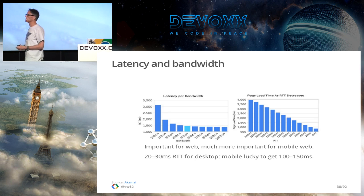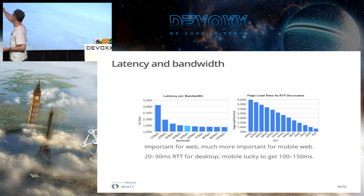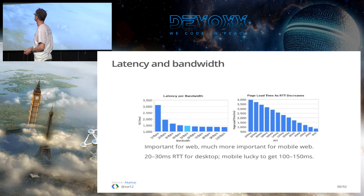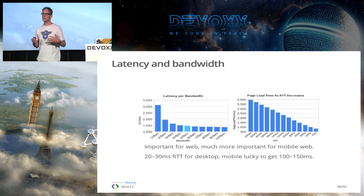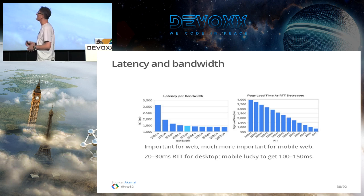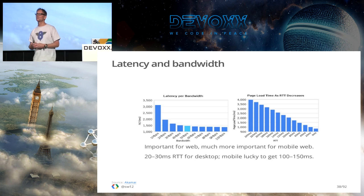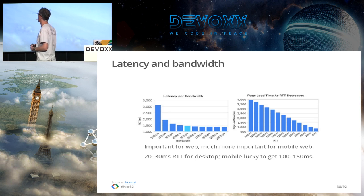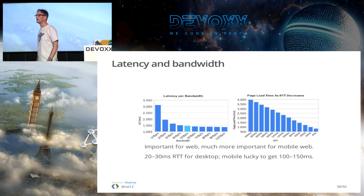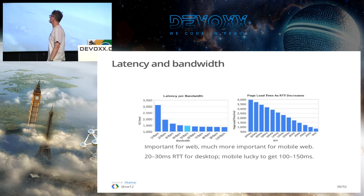The improvement in bandwidth we've seen doesn't actually solve the problem. On the left-hand side is a chart of bandwidth showing that page load time improves up to a point when you get to about 4 megabits and then it begins to flatten out — and that's the kind of point at which we're getting to with our connectivity in many contexts. On the other hand, as you improve latency, you get this linear relationship with improved page load times.